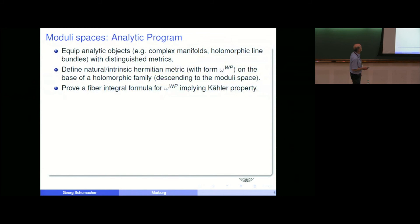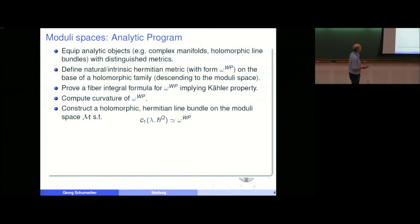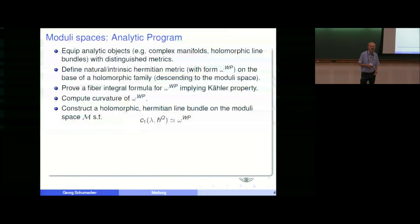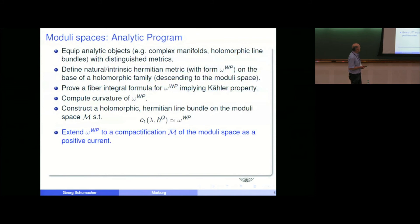The next issue is to compute the curvature of the line bundle lambda, which plays the role of the classical line bundle lambda p of Mumford, so that up to a numerical factor, the Weil-Petersson form will be the curvature form of a Hermitian holomorphic line bundle. These factors, which I'm going to drop, are usually made from powers of 2π, and maybe a factorial might occur.